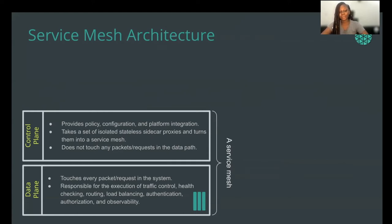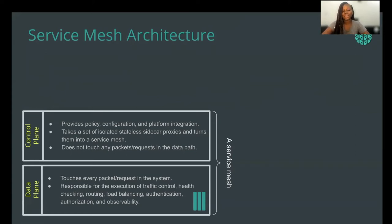Moving on to the second layer, which is the control plane. This is where operators interface with the service mesh. It deals with speaking to the proxies and updating the configuration for a given service mesh. In the control plane, your service mesh will provide policies, configuration, and platform integration. It takes a set of isolated stateless sidecar proxies and turns them into a service mesh, and it does not touch any packet requests in the data path.